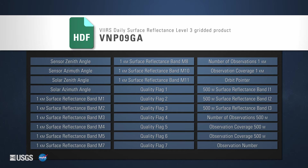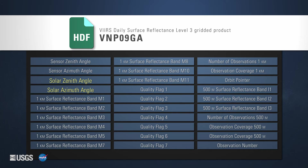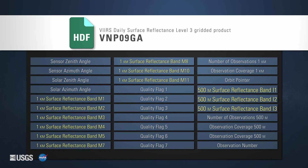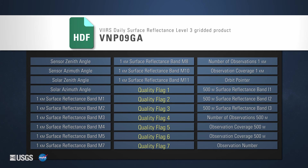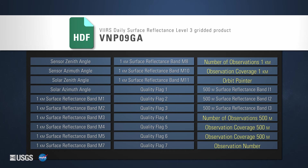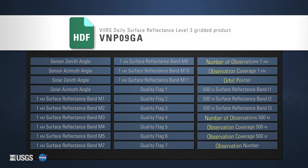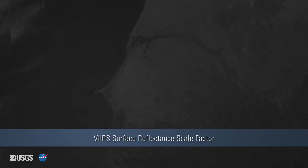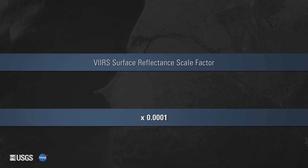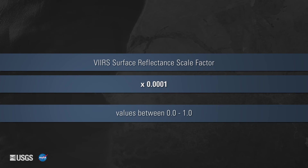The file for this product contains information about the satellite, the sun angles, the surface reflectance bands, quality information, and information about the satellite observations.